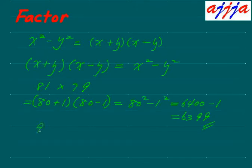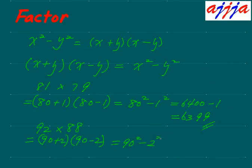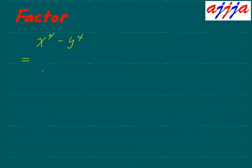So same way, maybe 92 times 88. That means you can change this one: 90 plus 2, 90 minus 2. So actually 90 squared, which is 8100, minus 2 squared, which is 4. So 8100 minus 4 is 8096. Fantastic!